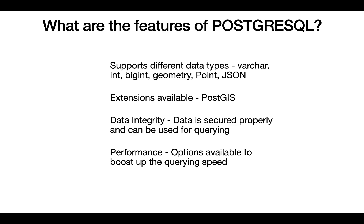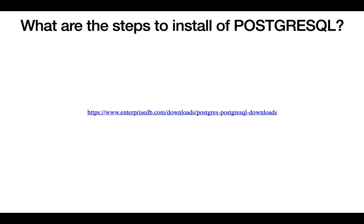Data integrity is a key feature — data is secured properly and can be used for querying. There are very few chances your data will be lost, and with technologies like Amazon Aurora you can create serverless Postgres databases where you will never lose data even during a hardware failure. There are also many performance options to boost querying speed, such as indexing, where data is stored in a fashion that allows it to be queried and fetched really fast.